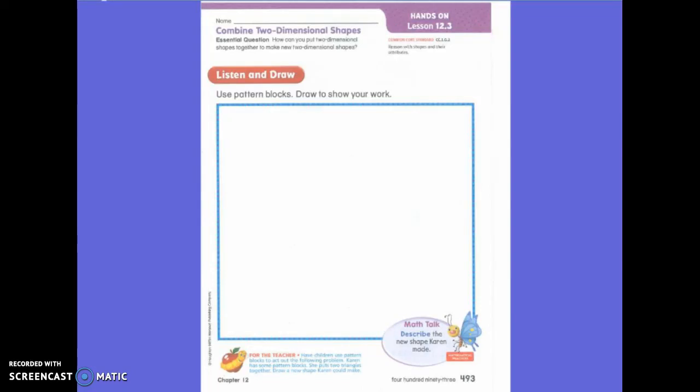Today we are going to be working on putting our two-dimensional shapes together to make a new shape. So Karen has some pattern blocks. She put two triangles together. Draw a new shape Karen could make.